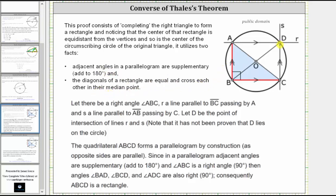We will use the diagram on the right for the proof. To begin, let there be a right angle, angle ABC, which is here in red. R is a line parallel to the segment BC, this line here, that passes by or passes through point A. And S is a line parallel to side AB, this vertical line, that passes by or passes through point C. Let D be the point of intersection of lines R and S, which is this point here. Note that it has not been proven that D lies on the circle. The quadrilateral ABCD forms a parallelogram by construction as opposite sides are parallel.